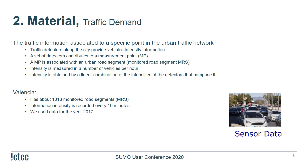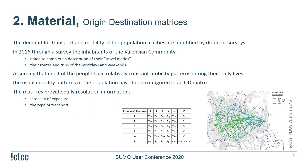Traffic detectors along the city provide vehicle intensity information. A set of detectors contributes to a measurement point; intensity is measured in vehicles per hour and obtained by a combination of intensities from different detectors. Valencia has more than 1,300 monitored road segments; intensity information is recorded every 10 minutes. For this study we use data from the year 2017. Regarding origin-destination matrices, the demand for transport and mobility in cities was identified through a survey in the Valencia community in 2016, where inhabitants were asked to complete travel diaries covering both workdays and weekends, assuming relatively constant mobility patterns.